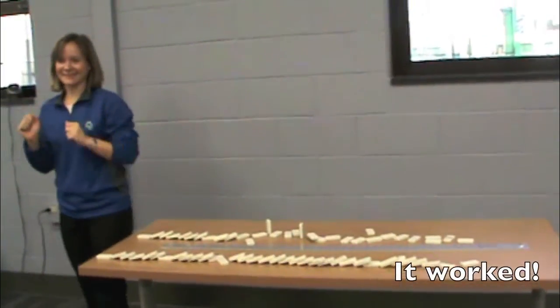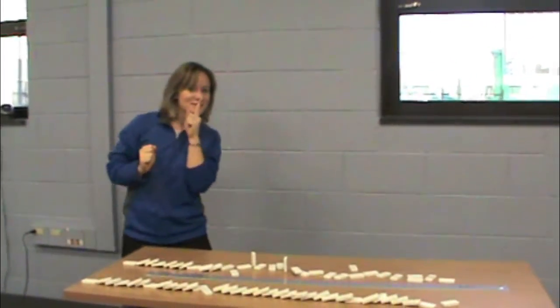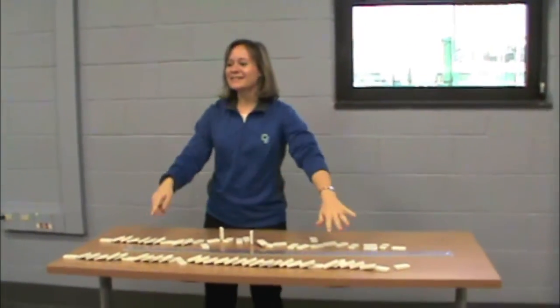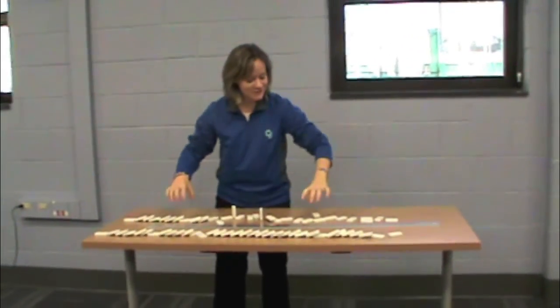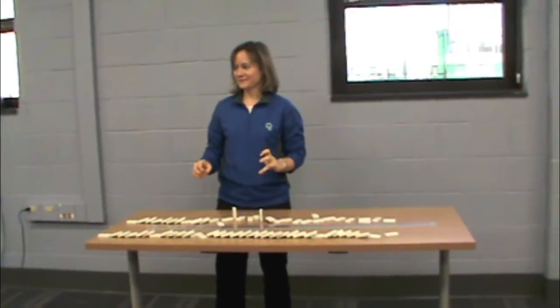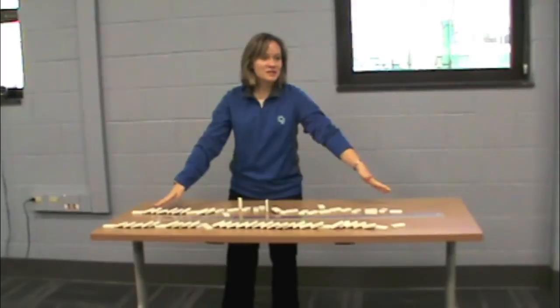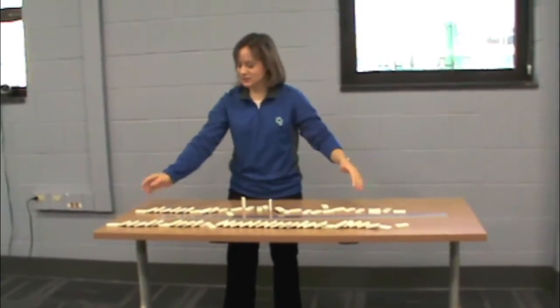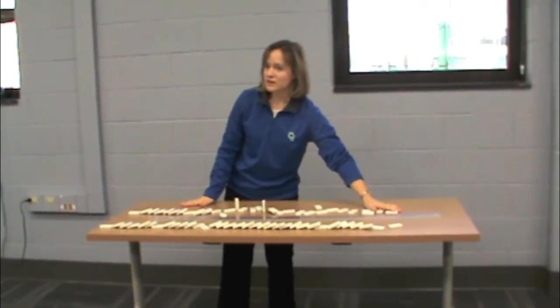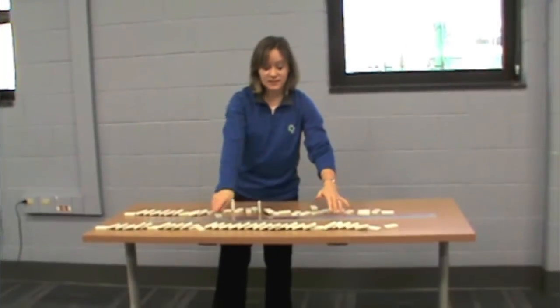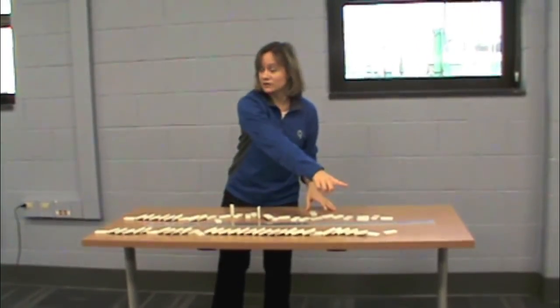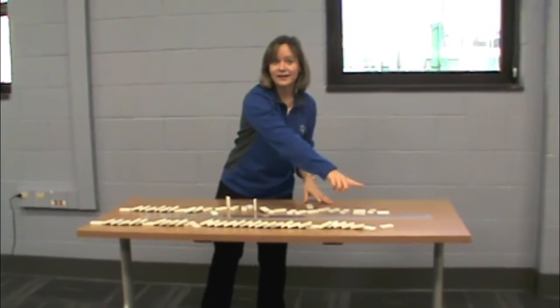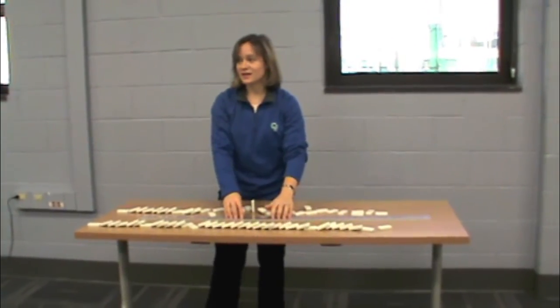It worked. All right. So what did you notice about the first row versus the second row? The first row was fast. This was almost immediate, right? It was almost instantaneous. As soon as I pushed on it, this last one fell down. While this, it was still going. It was like grandma in her car, still trying to get, right? So what do you think the stick represented?